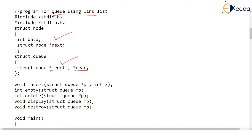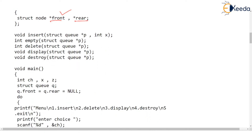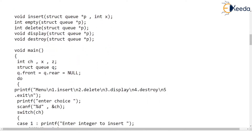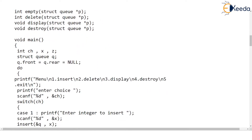Now let's take a look at main. From main we are going to call two major operations: insert and delete. Of course there are more operations like display, destroy, and return, but the two major operations done on a queue are insertion and deletion.